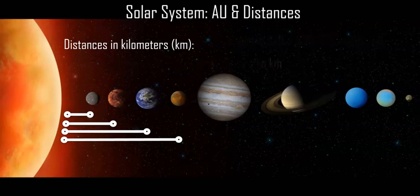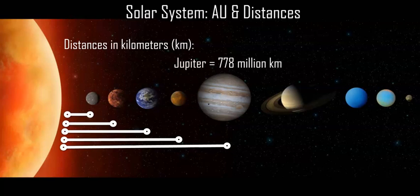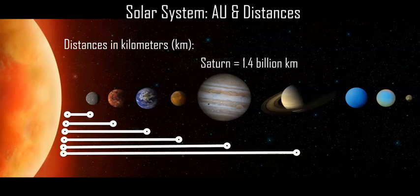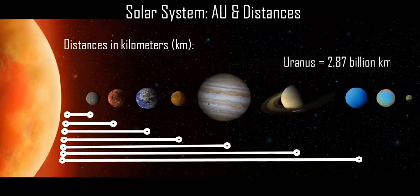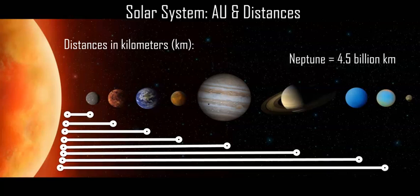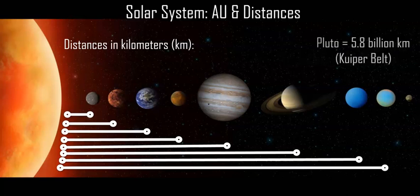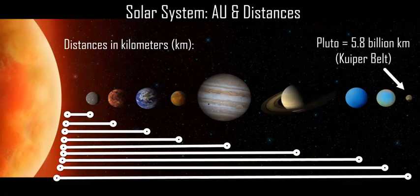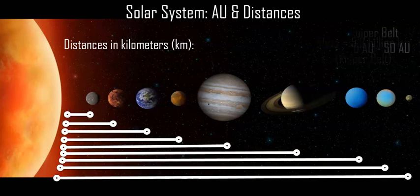Then you get the gas giants and Jovian planets: Jupiter at nearly 780 million kilometers away, Saturn in the billions at 1.4 billion kilometers, Uranus 2.87 billion kilometers, Neptune four and a half billion, and Pluto, our lovely dwarf planet decommissioned, is 5.8 billion kilometers.